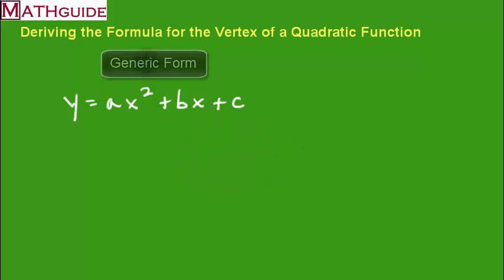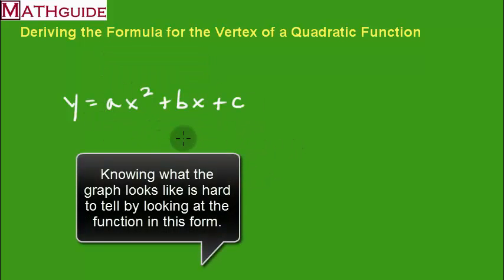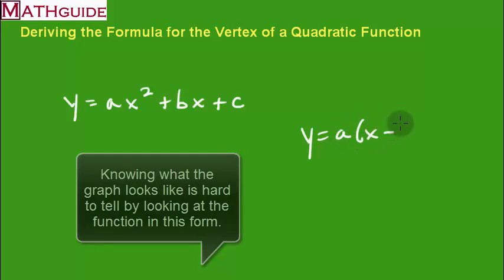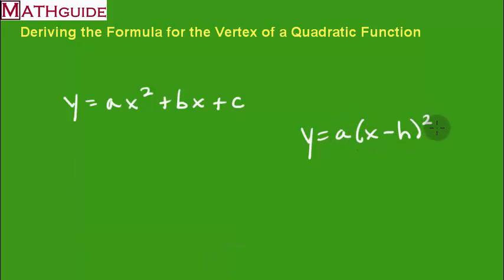I don't know what this looks like very well because it's in a bad form. Now if the quadratic was written into this form x minus h squared plus k, this is a nice convenient form to have. If the quadratic is written into this form it's really easy to see where the vertex is. It's just going to be the opposite of the h, and the k term.